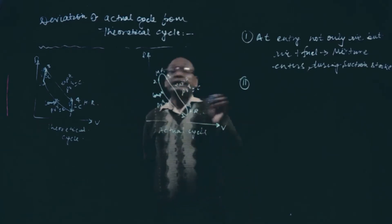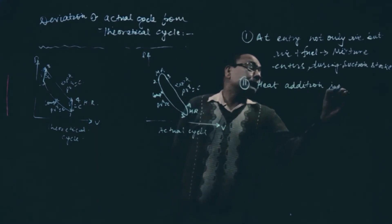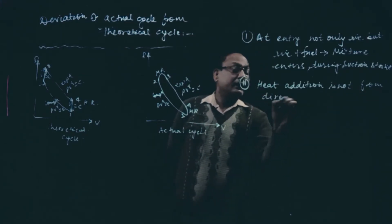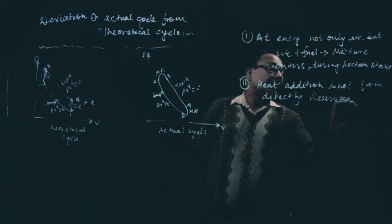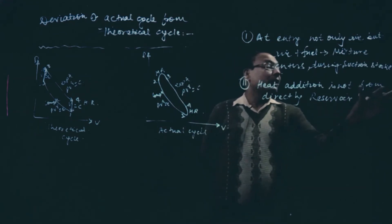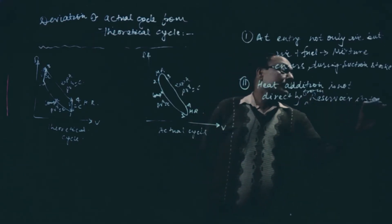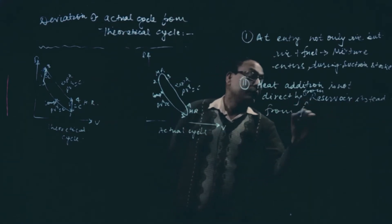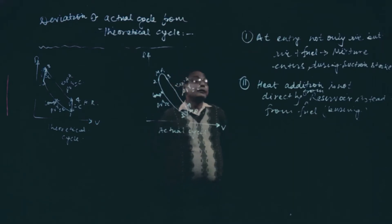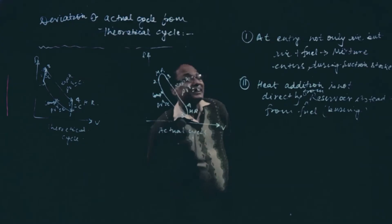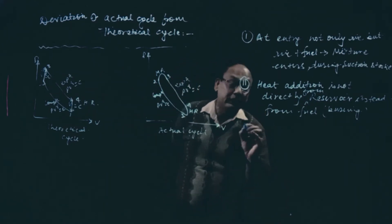Another reason: heat addition is not directly from a reservoir. Remember, in the theoretical cycle heat addition was assumed to come directly from a heat reservoir. But instead, heat addition is from burning the fuel. So heat is added due to combustion of the fuel inside the combustion chamber, not from a reservoir. Due to this, the theoretical figure and the actual figure differ from one another.